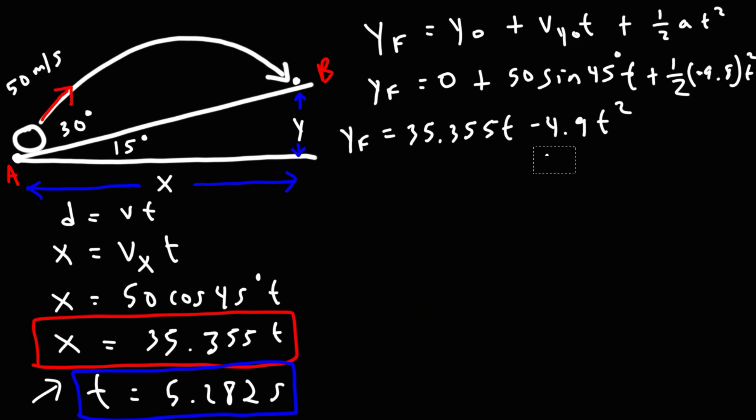So now that we have that, we can calculate x and y. We can find out where it lands, how far it traveled along the x direction, and how high it traveled along the y direction. So let's calculate y by plugging this into that equation. So let's calculate x and y.